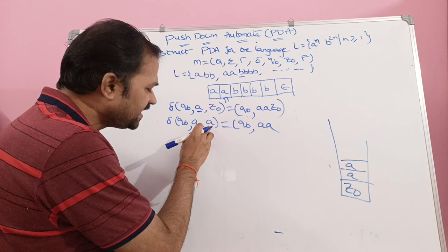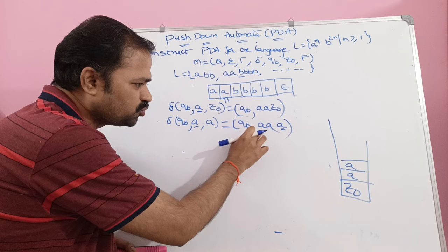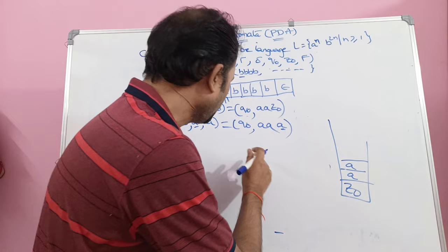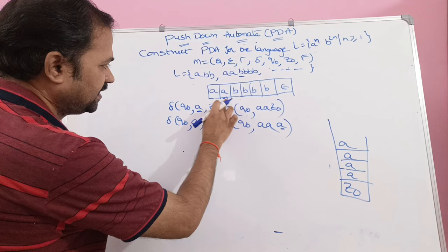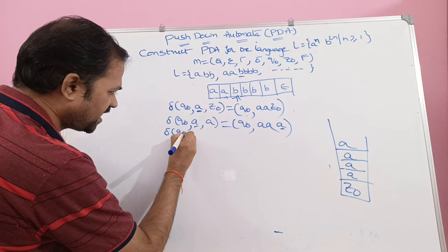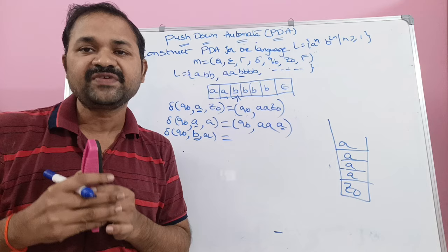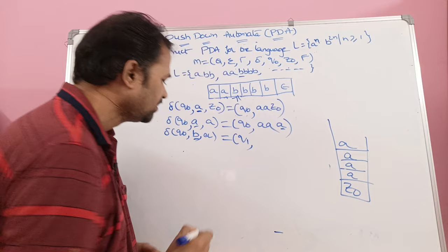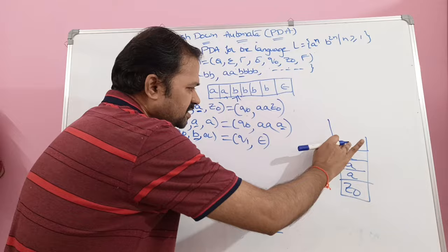Whenever we read input symbol 'a', we push 2 a's onto the stack. So after reading 2 a's, the stack contains 4 a's. Next, the read head is at the first 'b'. So δ(q naught, b, a): input symbol is 'b' and top of the stack is 'a'. For the first 'b', we have to change the state from q naught to q1 and pop the stack. Epsilon denotes the pop operation, so the top 'a' is popped. Now the stack contains 3 a's.